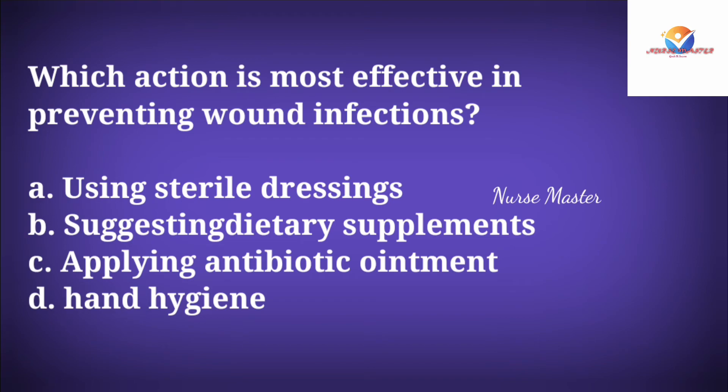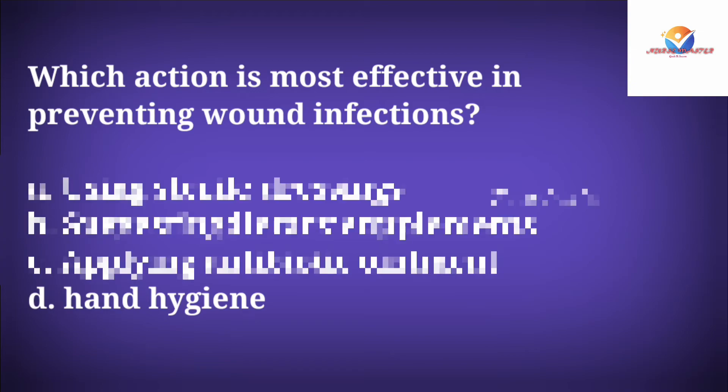Question: Which action is most effective in preventing wound infection? Option A: Using sterile dressings. Option B: Suggesting dietary supplements. Option C: Applying antibiotic ointment. Option D: Hand hygiene. The correct answer is hand hygiene.